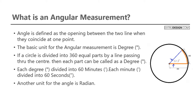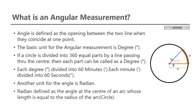Another unit for the angle is radian. Radian is defined as the angle at the center of an arc whose length is equal to the radius of the arc. One radian is equal to 57.2958 degrees.